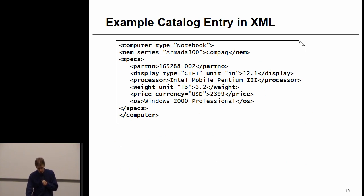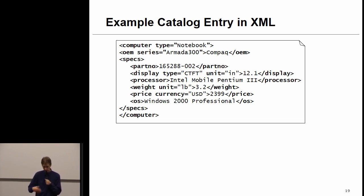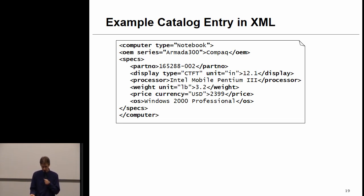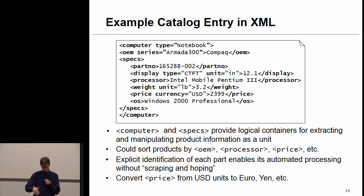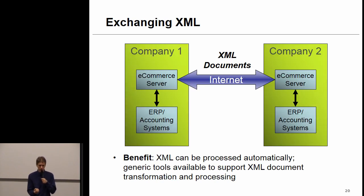You can see an example of a catalog entry in XML — a notebook specification. The tags represent the product specs: part number, display type, processor type, weight, price currency, and the price itself. If you want to query this catalog and ask for the price of a particular notebook, you can very easily do it. You can also sort catalog entries by price or processor. Using XML, we can specify the content of documents, and it's very easy to use in B2B exchanges.